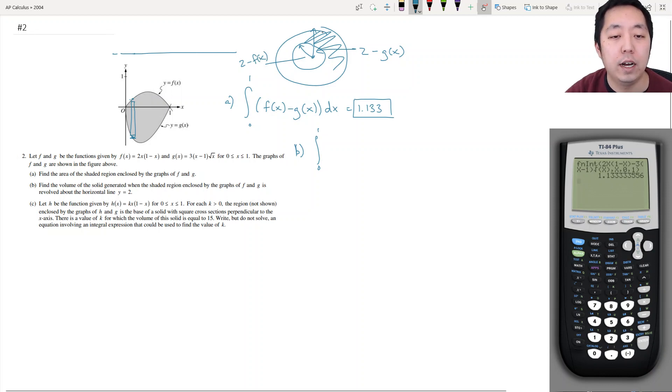And now the area of this disk, I just take the area of the bigger circle minus the area of the little circle, so that's pi. The area of the big circle is pi r squared, that's (2 minus g of x) squared, minus pi times the area of the little circle which is (2 minus f of x) squared, and all of that needs to be integrated over dx. And I can factor out a pi.